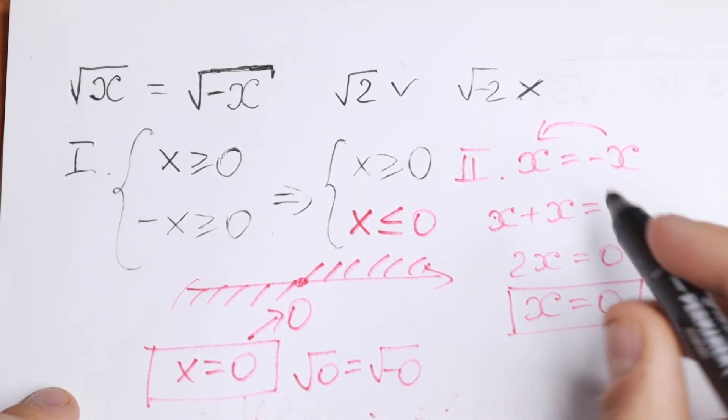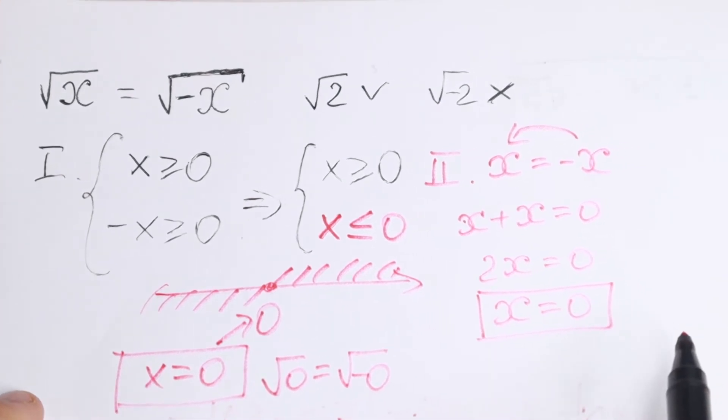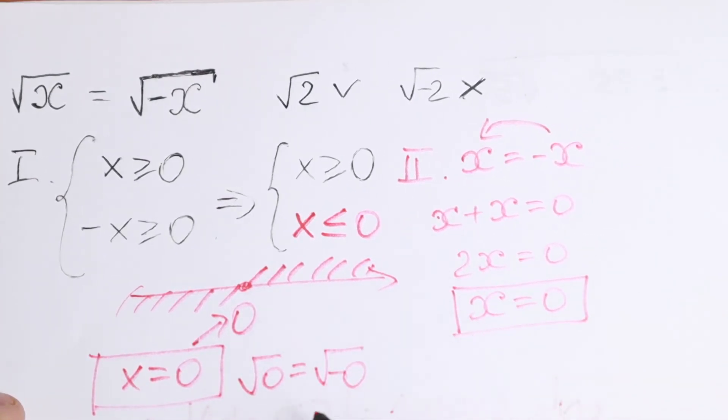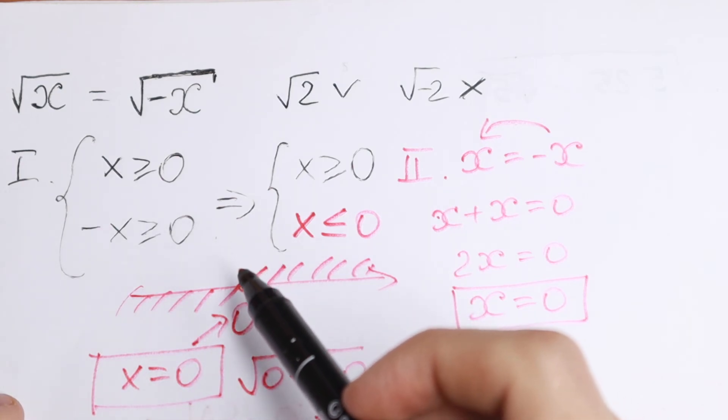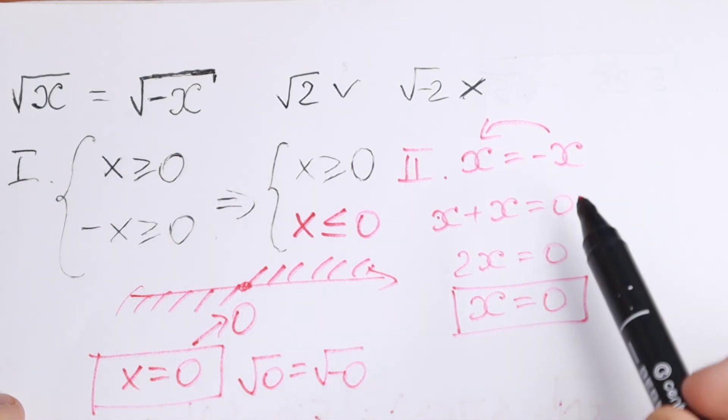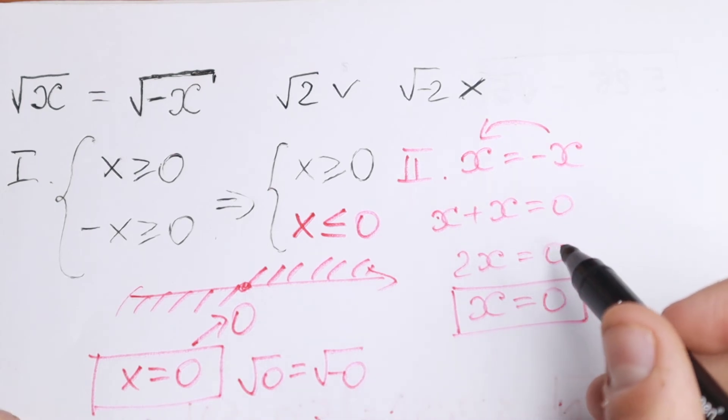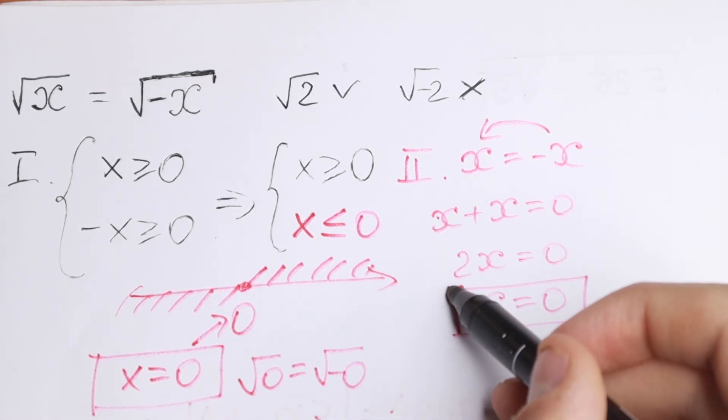So we have our root. We showed two methods to solve it. The first method uses inequalities and is a bit longer, but it's the correct rigorous method. The second is a faster method.